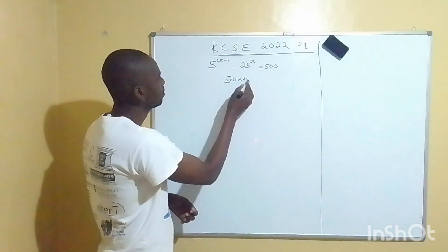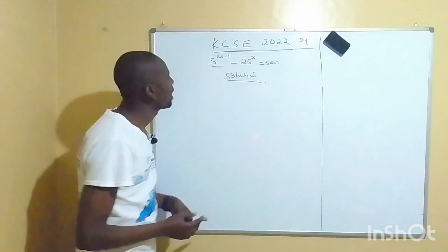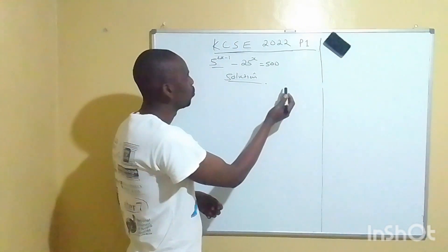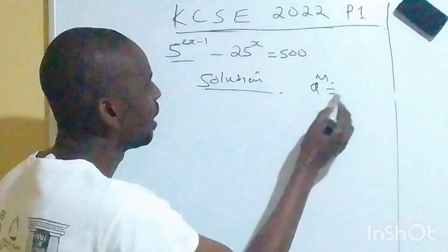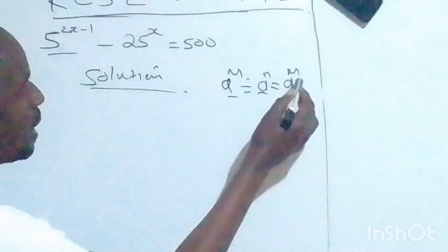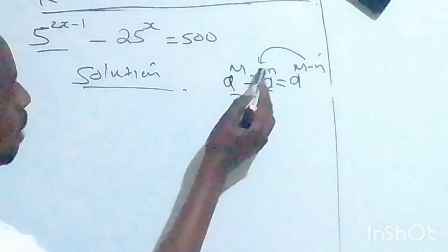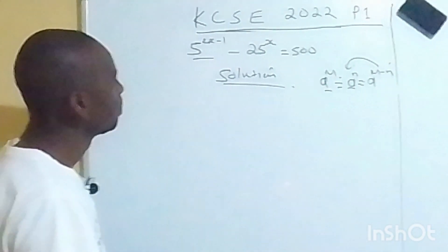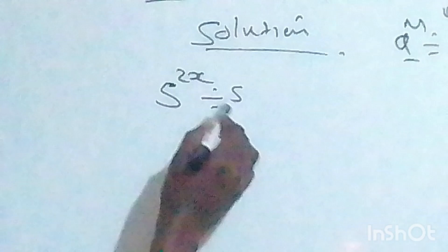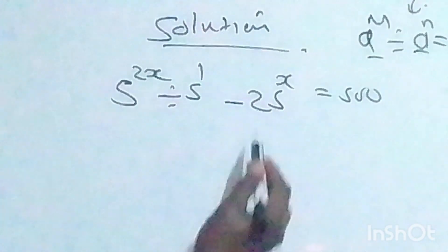So, solution. The first step: we can see we have 5^(2x-1). From the second law of indices, when you have a raised to a number divided by a raised to a certain power, you pick the base which is a, then you subtract the powers. So that means when I break this one out, I have 5^x divided by 5^1, minus 25^x, is equal to 500. We can also change 25 to base 5.